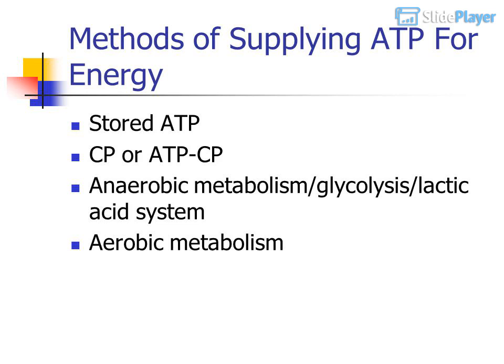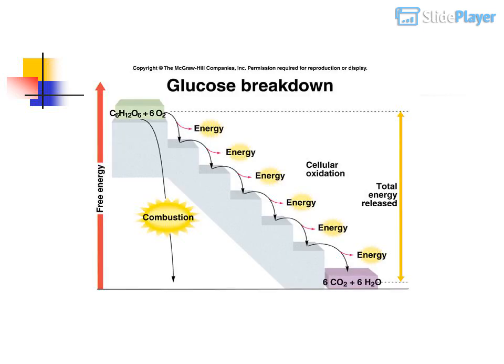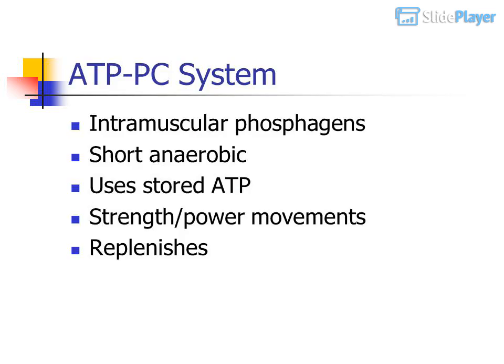Methods include stored ATP and CP (the ATP-CP system). The anaerobic metabolism slash glycolysis slash lactic acid system, and aerobic metabolism. The ATP-PC system uses intramuscular phosphates, is anaerobic, uses stored ATP and CP, supports strength and power movements, and replenishes quickly.